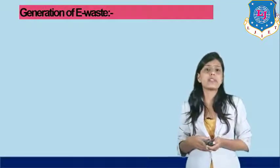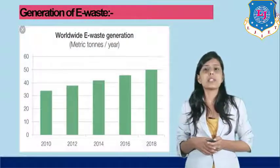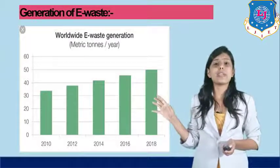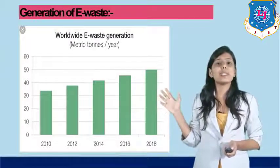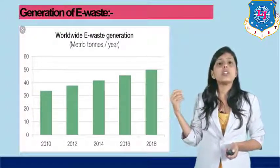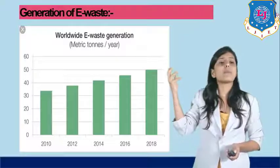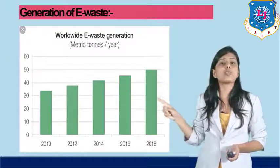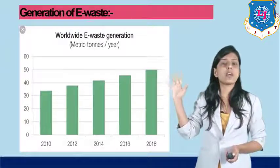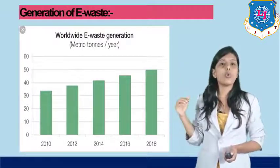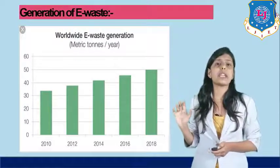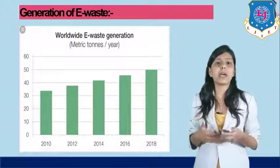Now, how is e-waste generated? E-waste generated worldwide was lower in 2010, but by 2012 it reached 40 million metric tons. By 2014 it increased further, and by 2018 it increased to almost 50 million metric tons, with projections to increase even more in the coming years. This much amount of electronic waste is being emitted year by year.